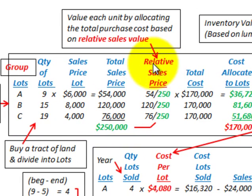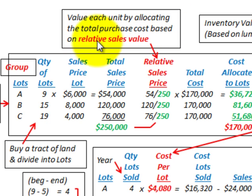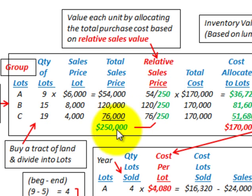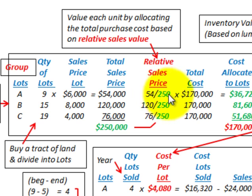This is the key — this is where we come up with the relative sales price. The relative sales price allocates the total purchase cost based on each group's relative sales value. For lot A, the total sales price of $54,000 is divided by the total sales for all lots of $250,000, giving us this fractional amount.